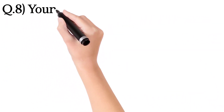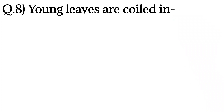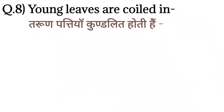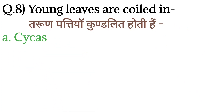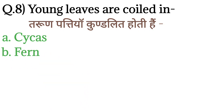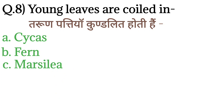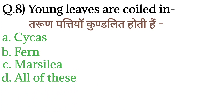Question number 8: Young leaves are coiled in — tarun pattiyan kundalit hoti hain. Option A: Cycas. Option B: Fern. Option C: Marsilea. And option D: All of these.